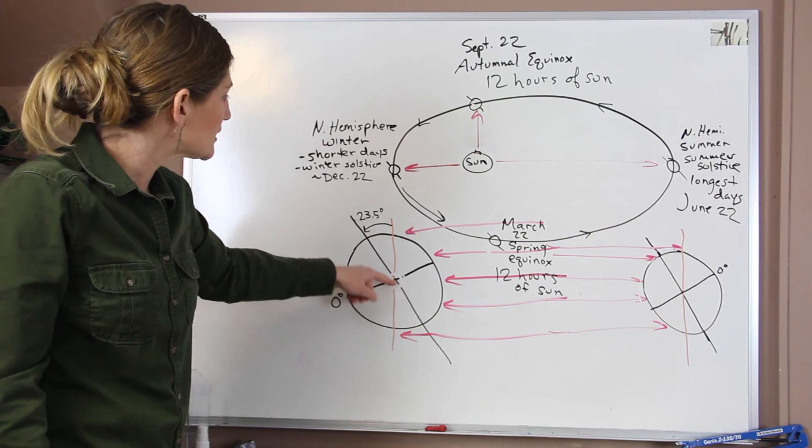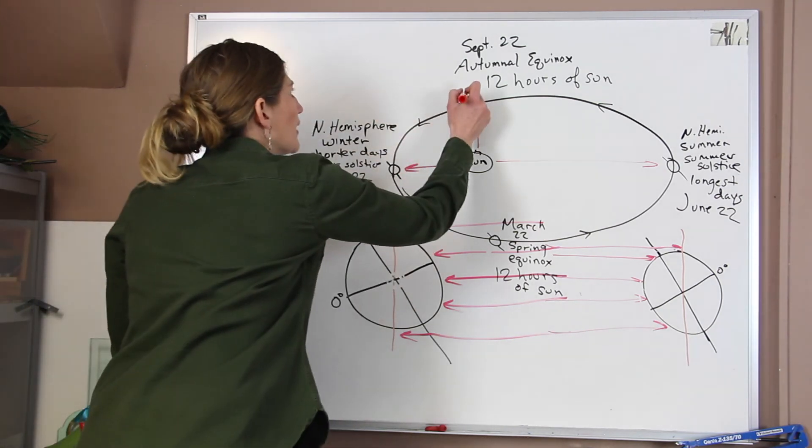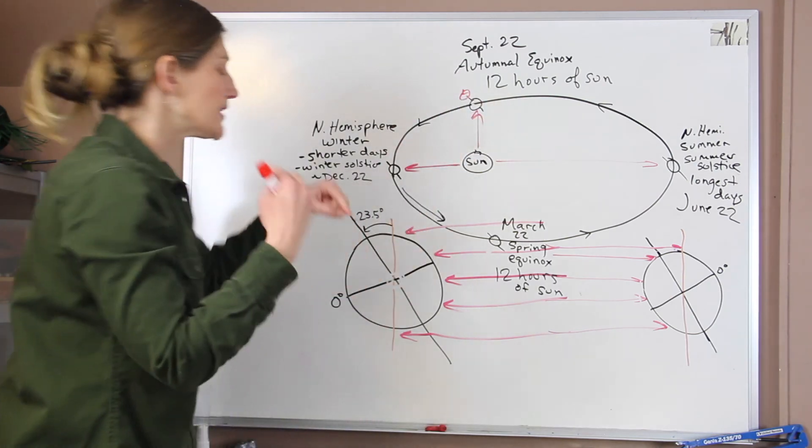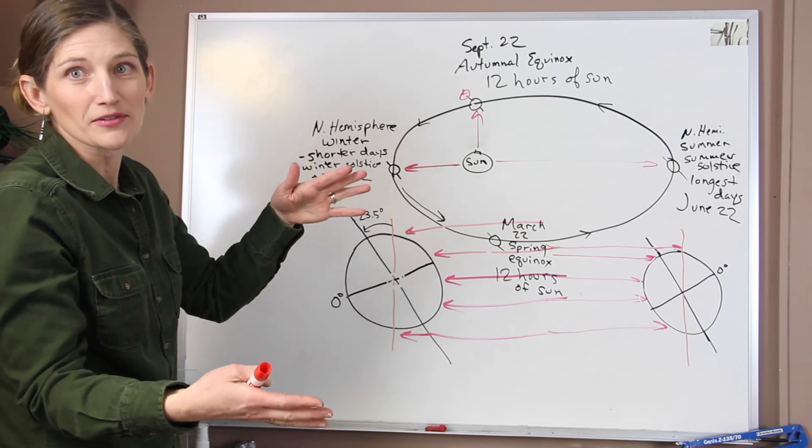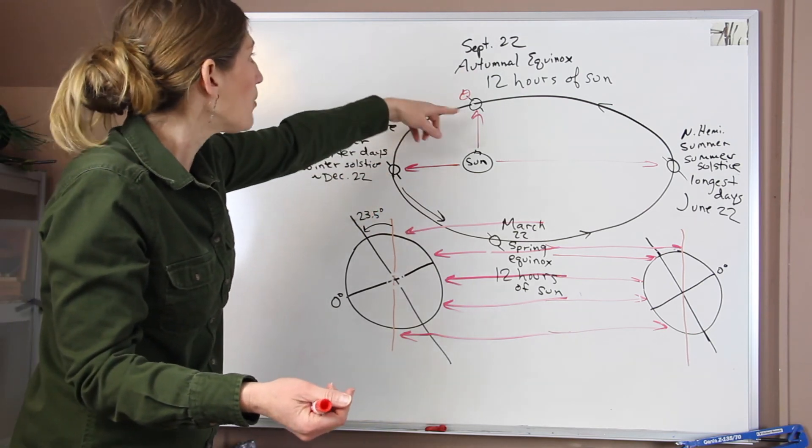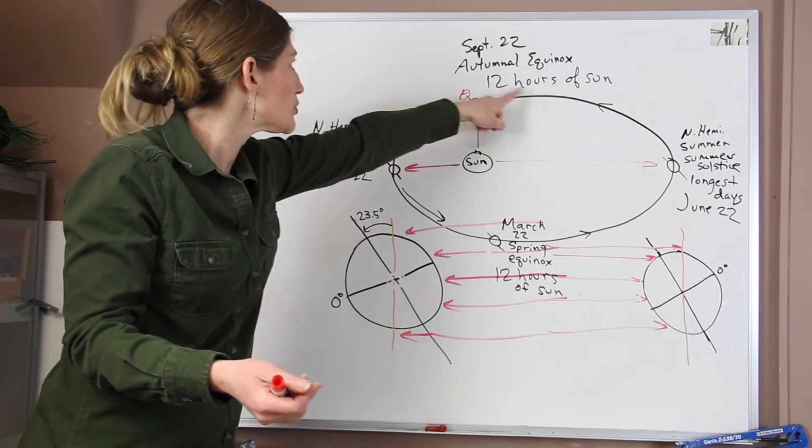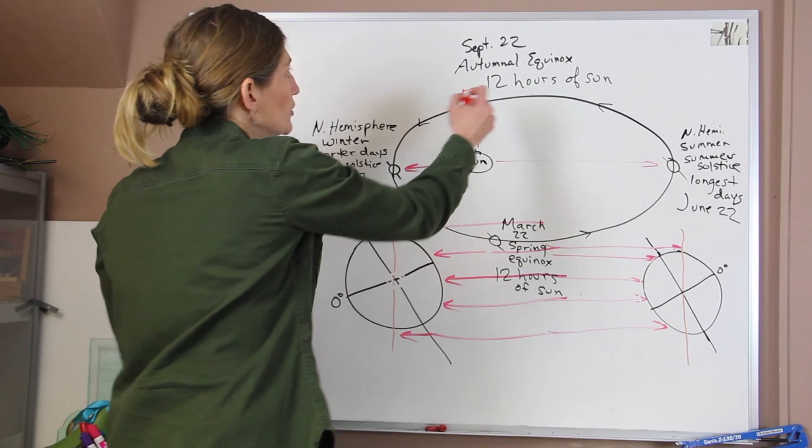And so that means as we spin around in this direction, we're kind of rotating around on our axis, every location from the north pole to the south pole is getting the same amount of solar radiation on this day. So it's a 12 hour day at all points on the earth. Okay, so that's 12 hours of sunlight at every location. And the sun is overhead at noon at the equator.